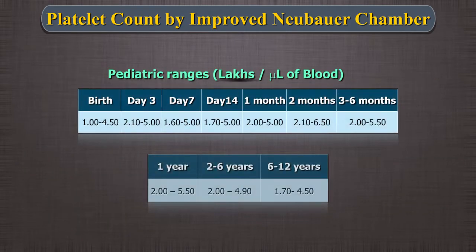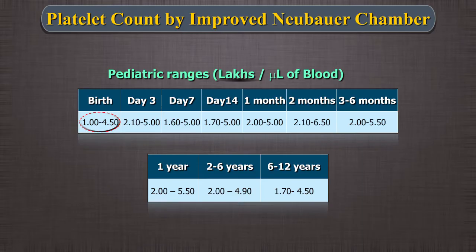Pediatric ranges are different as shown in the table. You can understand from the table that a platelet count of 1.4 lakhs, which is normal for adults, is low for children except in neonates. This should be kept in mind while reporting platelets in children. That is why it is very important to have age-specific biological reference ranges defined on the report formats.